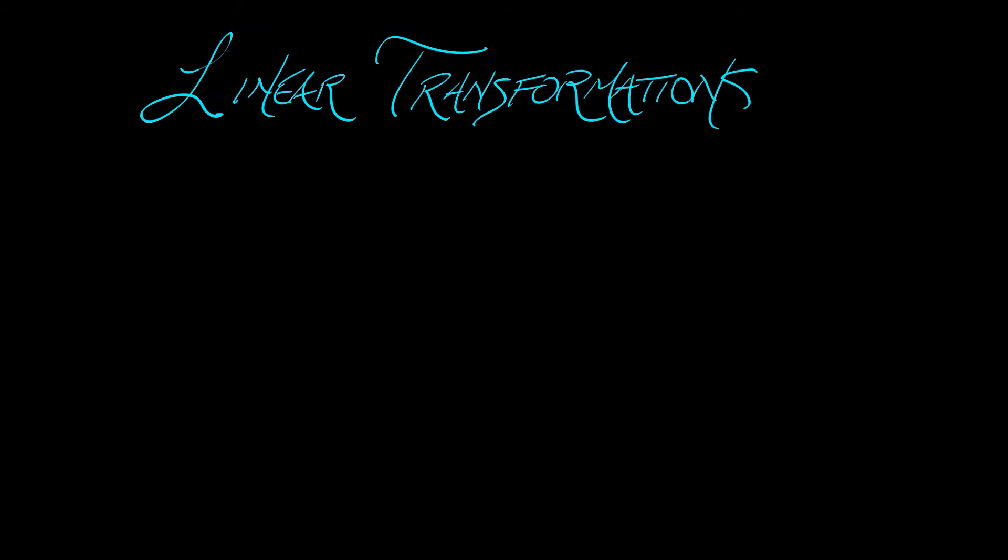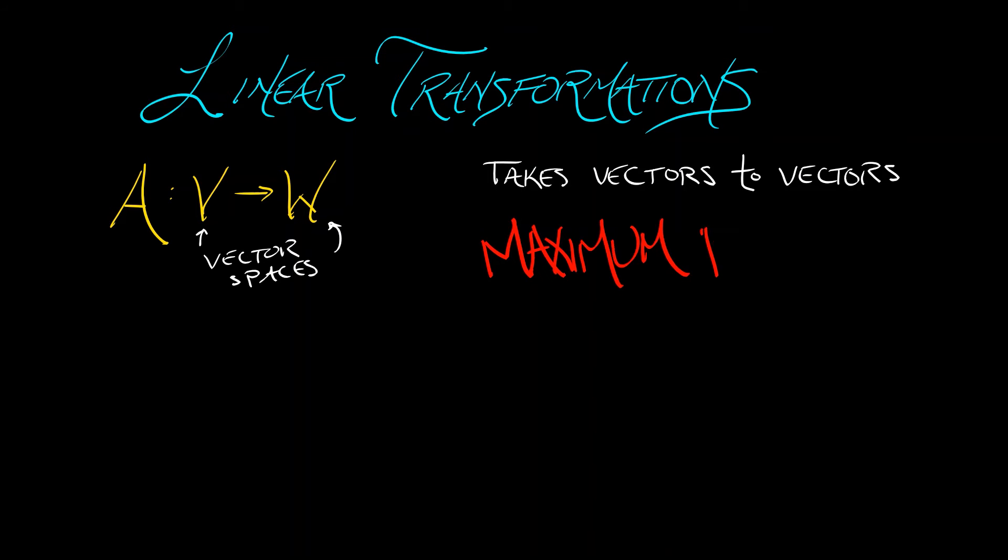Let's call the linear transformation A, the two vector spaces V and W. This is a function that takes vectors in V to vectors in W. It takes vectors to vectors, but it does so in a certain way, in a linear way, in a way that evokes maximum respect.